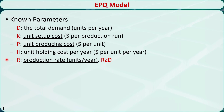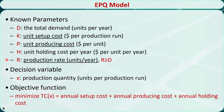The EPQ model determines the most economic production quantity x that minimizes the yearly sum of setup cost, production cost, and holding cost. The total cost is denoted by TC, which is a function of x.